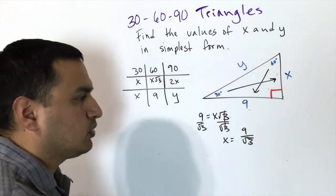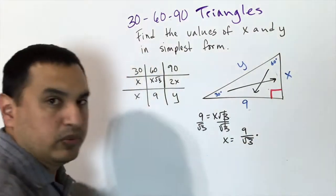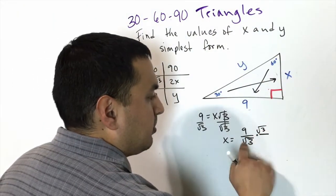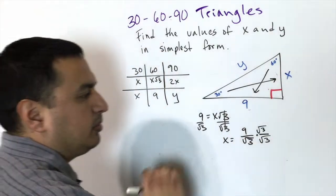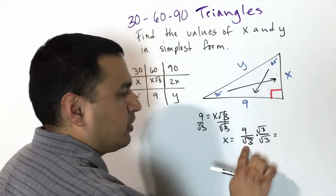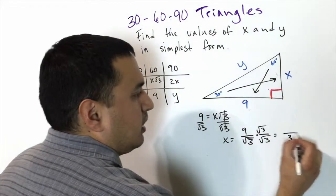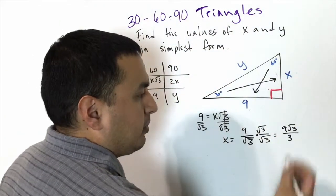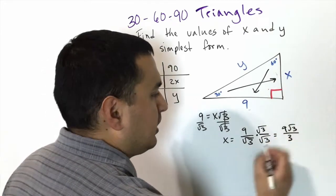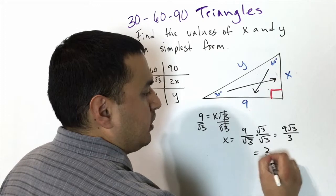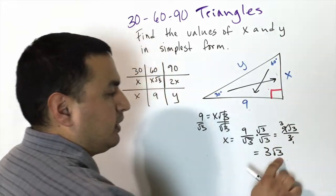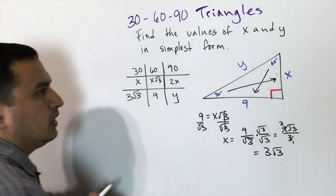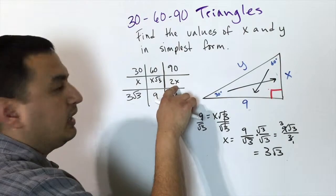We can't leave a radical in the denominator, so we rationalize by multiplying top and bottom by √3. The denominator becomes √3 × √3 = 3, and the numerator becomes 9√3. We can then reduce: 9 divided by 3 is 3, so x = 3√3.